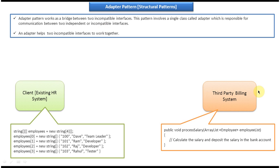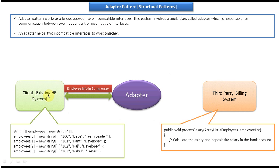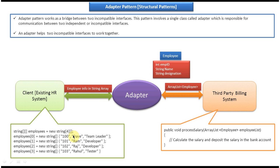So how can we make these two incompatible interfaces work? We can use the adapter design pattern. We introduce an adapter between the HR system and the third-party billing system. The HR system will send employee information as a string array to the adapter. The adapter then reads employee information from the string array, populates employee objects, puts them in an array list, and sends this array list of employees to the process salary method.